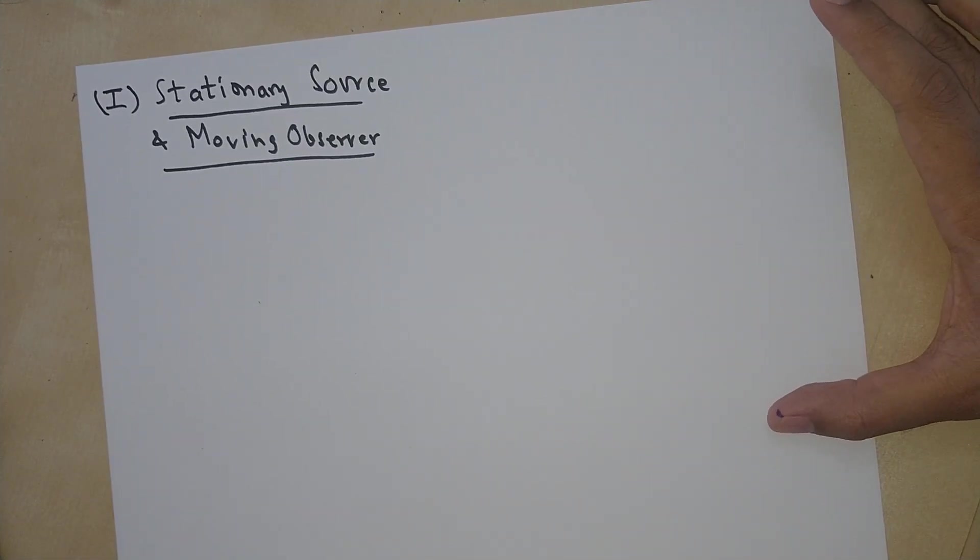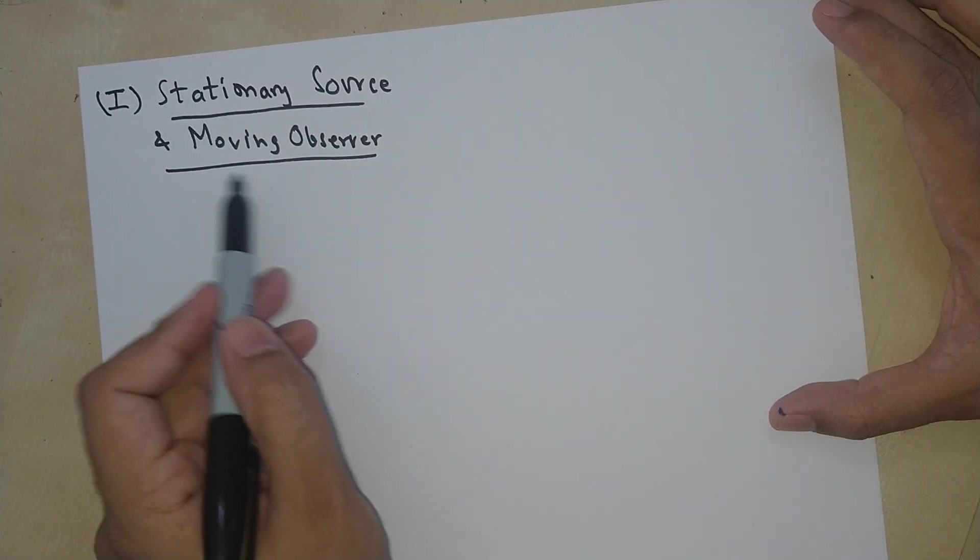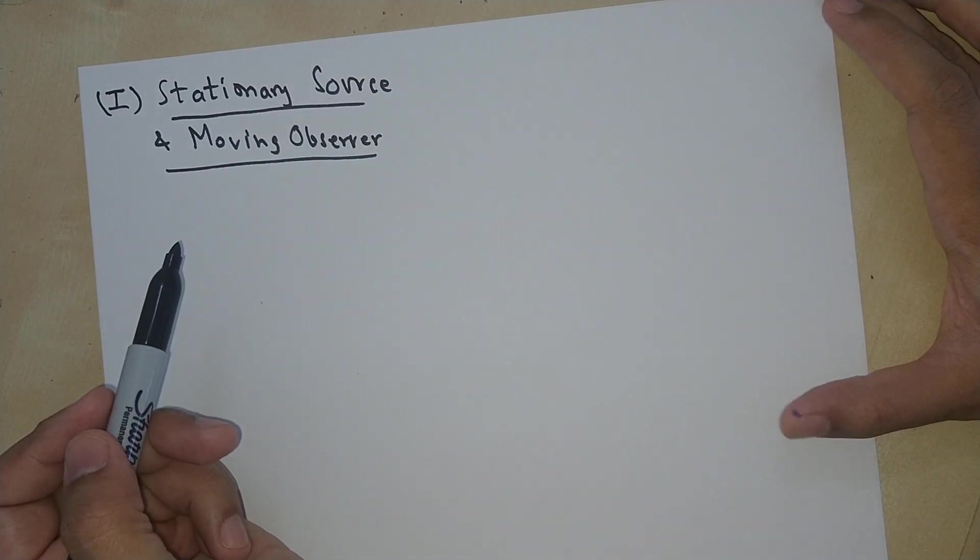So we're discussing the Doppler effect. Let's look at the scenario where the source is stationary and the observer is moving relative to the source.